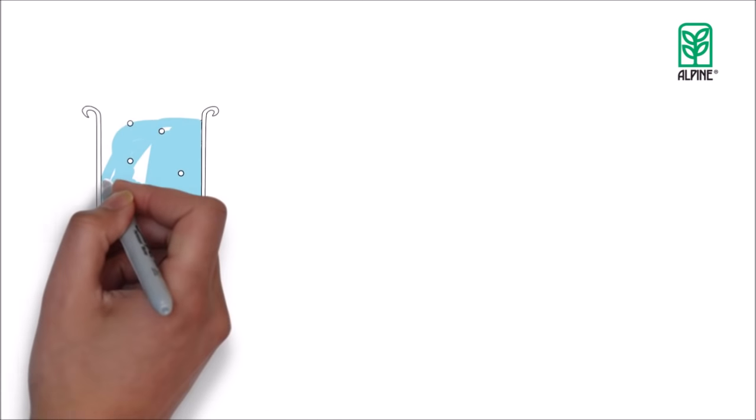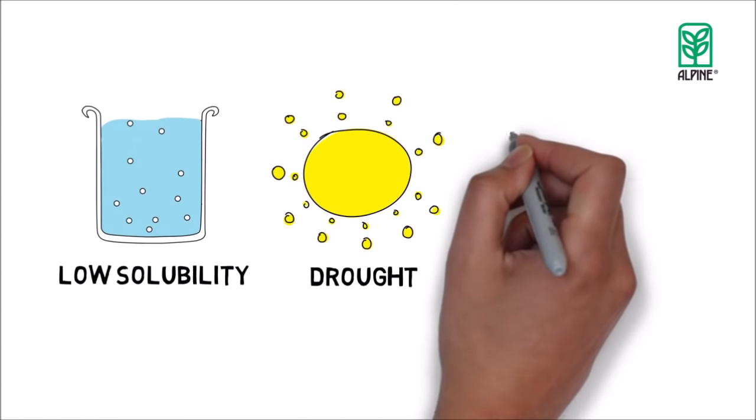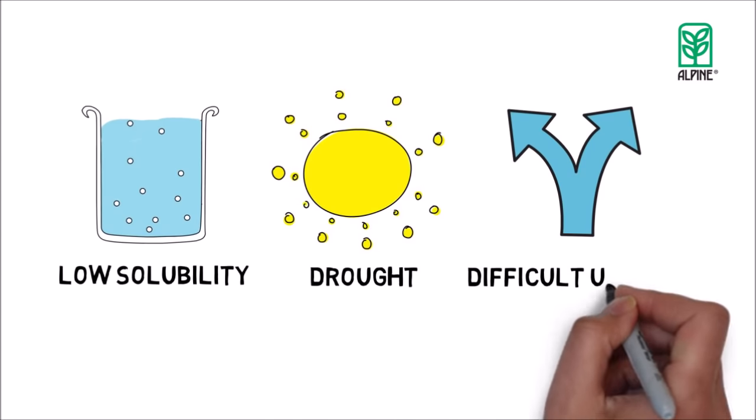This is due to low solubility in the soil, restricted availability due to drought conditions, and having a difficult time entering the plant via typical uptake points.